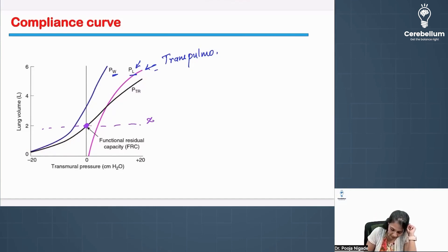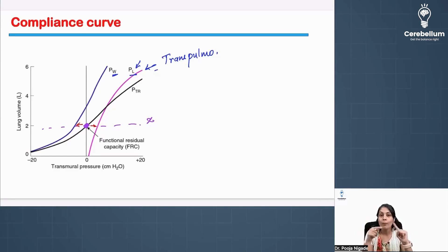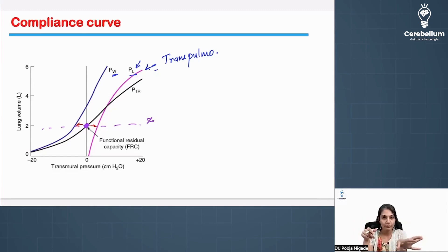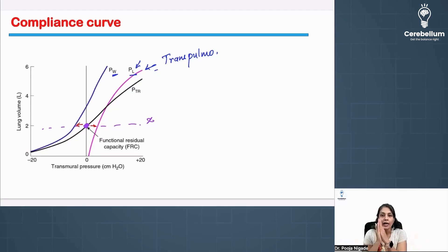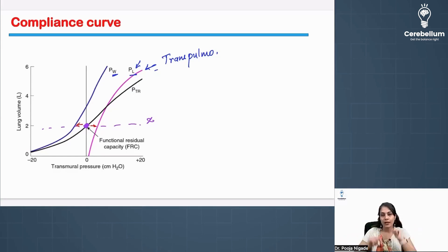Please take note: X is the point where your transthoracic and transpulmonary pressure are equal but opposite. Let's say there is minus 5 pressure across the chest wall and plus 5 pressure across the lung — they are going to balance each other. There will be no entry or exit of air and no muscle will be contracting at that point.